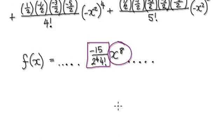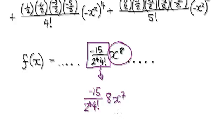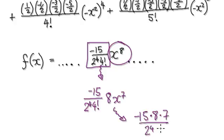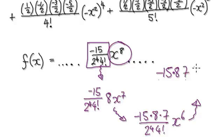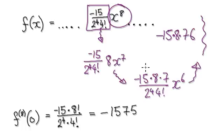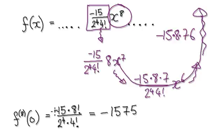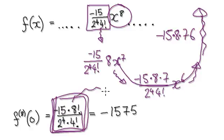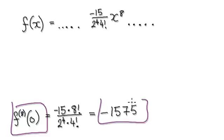Now differentiate this eight times. Differentiating once gives the coefficient times eight, times x to the seventh. Differentiating again gives the coefficient times eight times seven, times x to the sixth, and so on. After differentiating eight times you get the coefficient times eight factorial, which is just a constant. Evaluate at zero — this constant is your answer. Jump to a calculator and it gives you the final value.